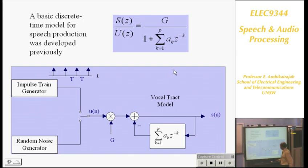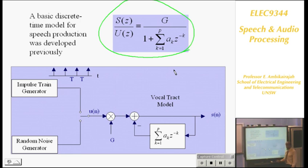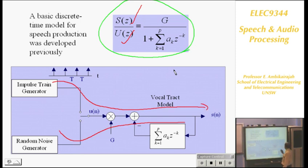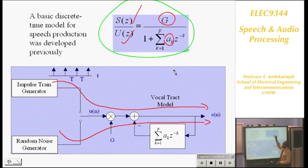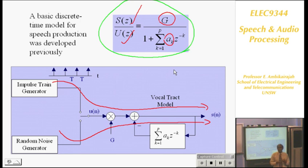Let's look at the block diagram. This is our vocal tract model — transfer function. That's your speech output, that's your excitation. The simplified model for voiced and unvoiced transmission combines into a single transfer function. What are we trying to calculate using linear predictive technique? We are trying to calculate coefficient A. G will be a byproduct. These coefficients represent the vocal tract as a digital filter model. Every 10 milliseconds, you will have a set of 12 coefficients.